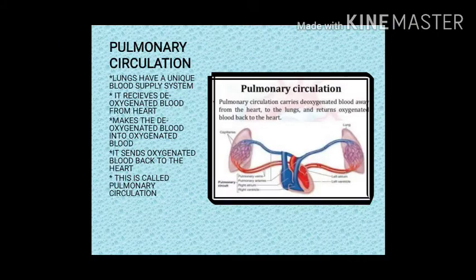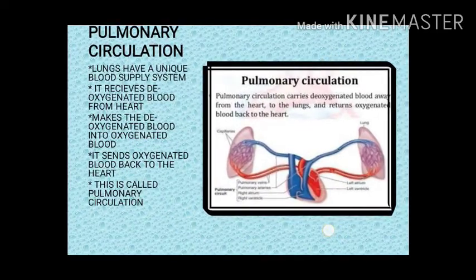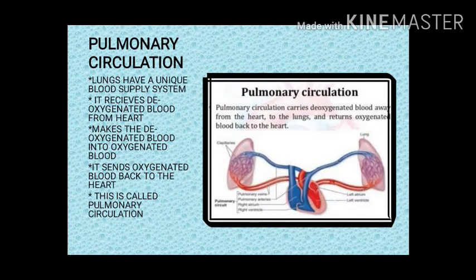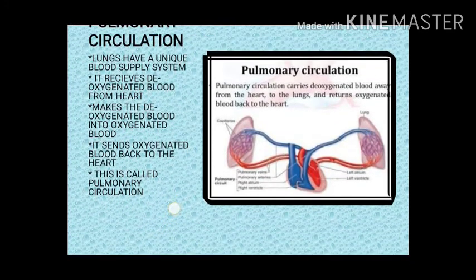Moving on to pulmonary circulation — the lungs have a unique blood supply system. They receive deoxygenated blood from the heart, convert it into oxygenated blood, and send it back to the heart. This process is called pulmonary circulation.